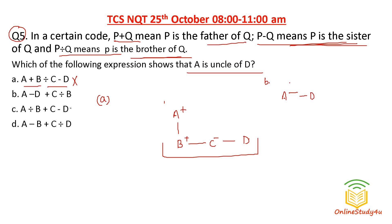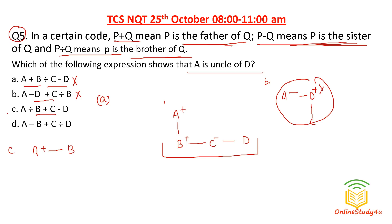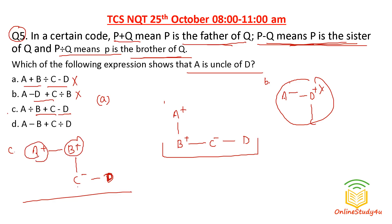Option B: A−D means A is the sister of D, and D+C means D is the father of C — A is not an uncle here. Option C: A÷B means A is the brother of B; B+C means B is the father of C; C−D means C is the sister of D. So C and D's father is B, and A is the brother of B — a father's brother is always an uncle. So option C correctly represents that A is the uncle of D.